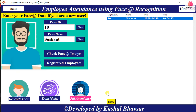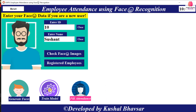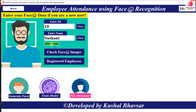Now I'm closing this. It's time for training. When I click on 'Train Model' it will show a progress bar, and after the progress bar completes, my model will be trained. Model is trained.